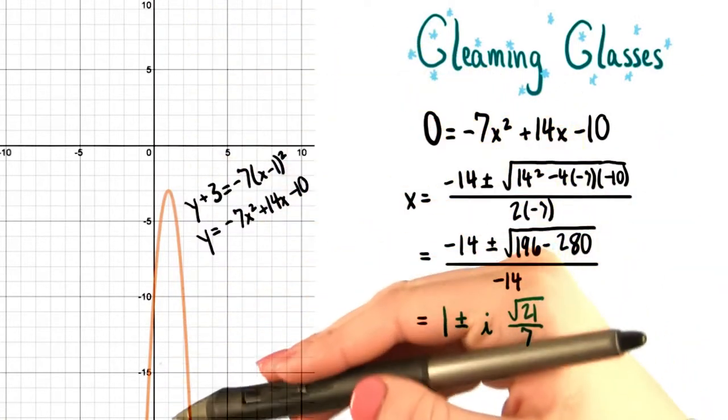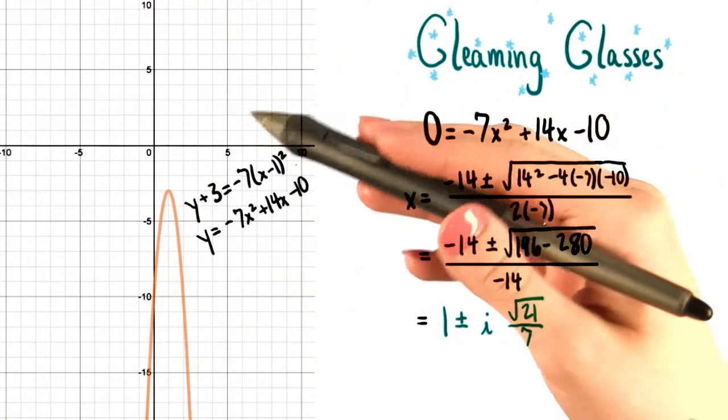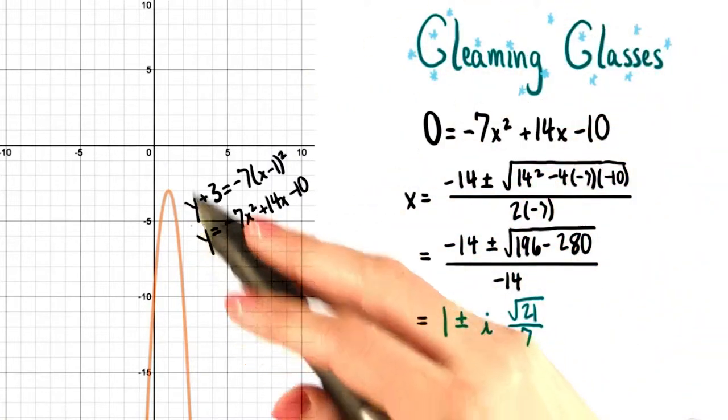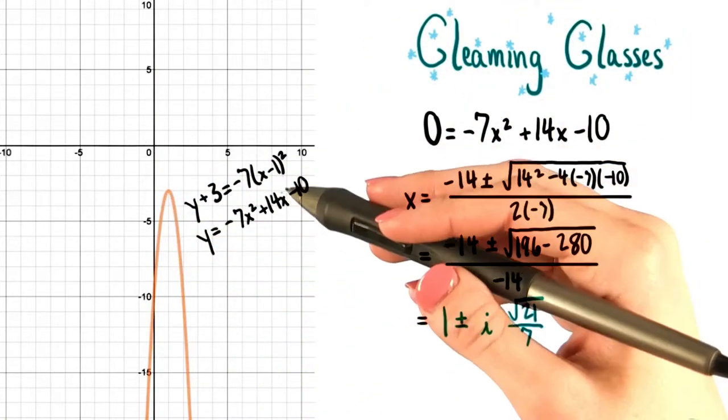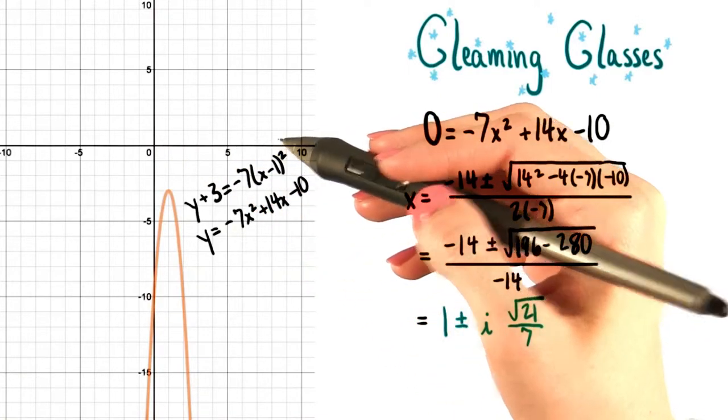Remember that y here, in this equation and in this graph, is the vertical displacement from the ground of the water. And x is the horizontal displacement of the water.